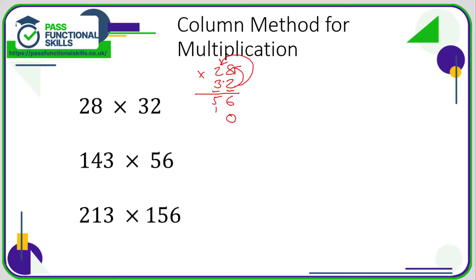Now 3 times 8 is 24, so that's 4 carry 2. Then 3 times 2 is 6, plus the carried 2 makes 8. All I'm going to do now is add up the top line and the bottom line, ignoring any numbers written for carrying over. 6 plus 0 is 6, 5 plus 4 is 9, 8 plus nothing is 8, so the answer is 896.